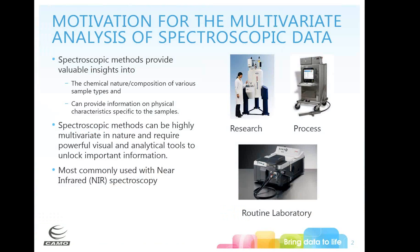Spectroscopy can also give us physical characteristics specific to the samples. They are highly multivariate by nature and require very powerful analytical tools to unlock that information. Multivariate data analysis is especially used for near IR, due to all the overtones and combination bands that you see in the NIR — you tend not to have the nice sharp peaks you might have in the mid-infrared or Raman data.